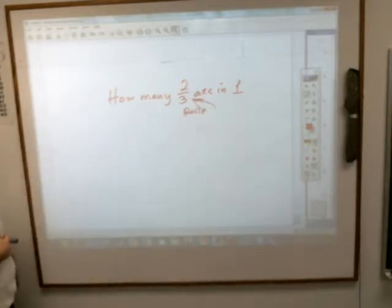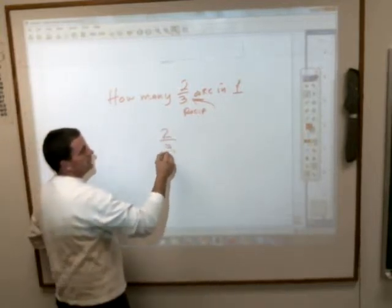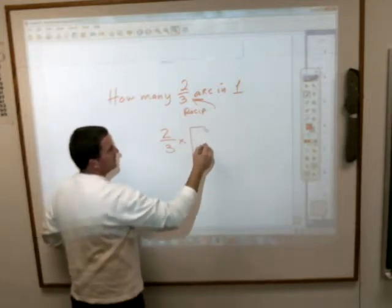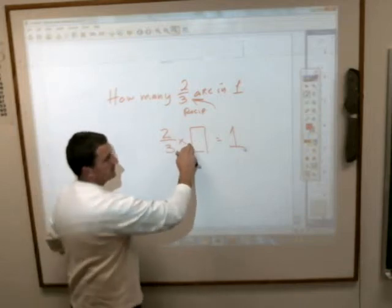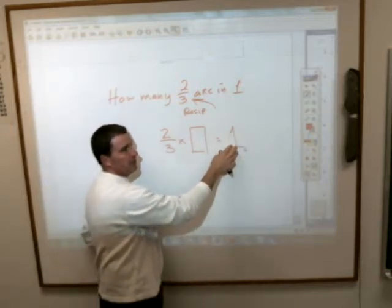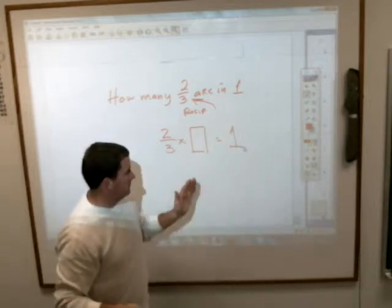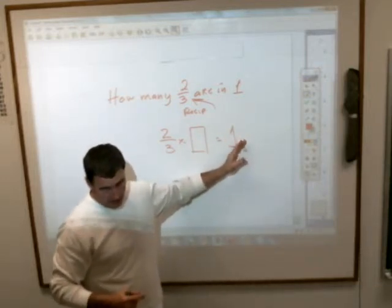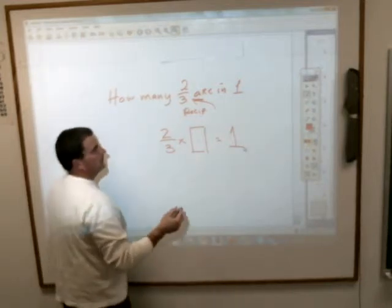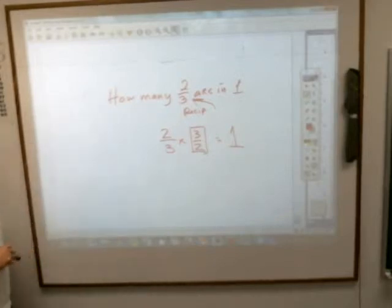Okay, how many two-thirds are there in one? In other words, they're asking you this. Two-thirds times what number is one? How many two-thirds would you multiply together to get one? And we just said, we just... The whole reciprocal thing was a number and its reciprocal will give you one. And so the answer to this is, Kelsey? Three halves. Three halves.